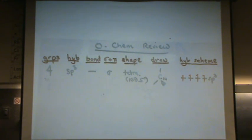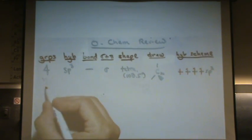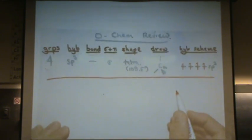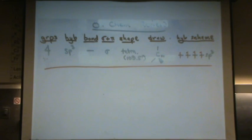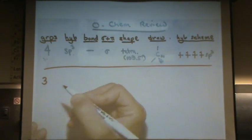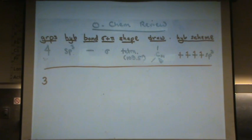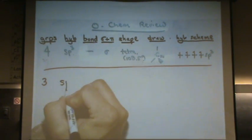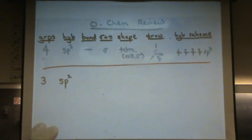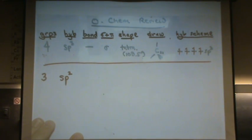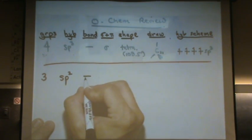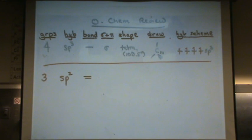Now we'll see how it'll look different when we have a different number of groups. So that's four groups. For carbon, you can also have three groups. Three groups would be sp².